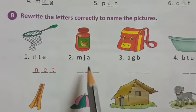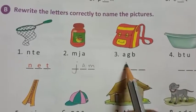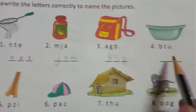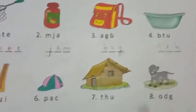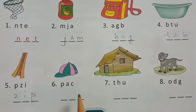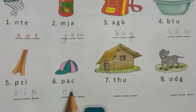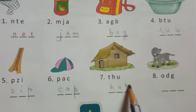What will this be? M, J, A. This becomes J, A, M - jam. What will this be? B, A, G - bag. This one corrected is T, U, B - tub. This one is Z, I, P - zip. If we correct it, C, A, P - cap. And this one is H, U, T - hut. Dog.